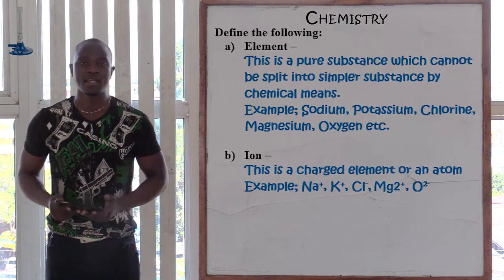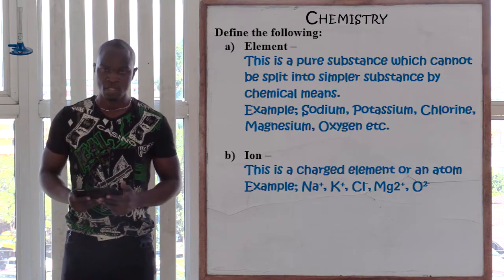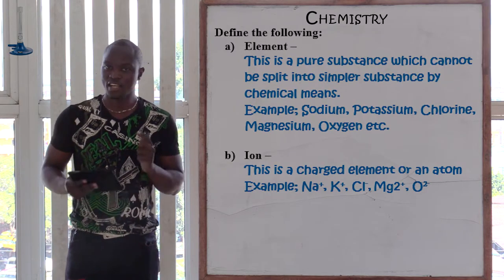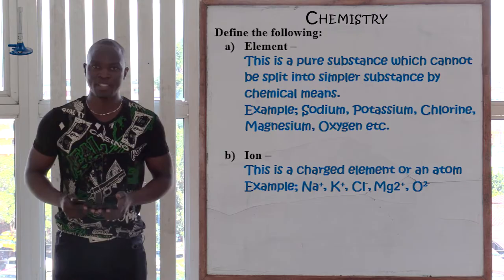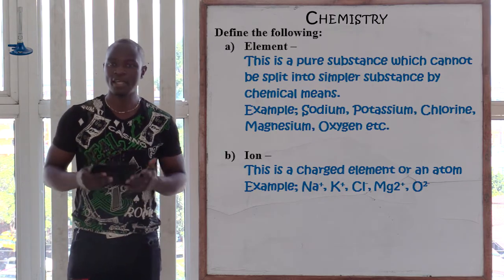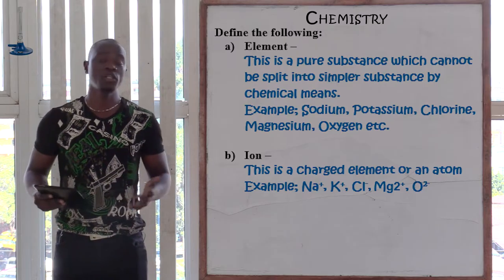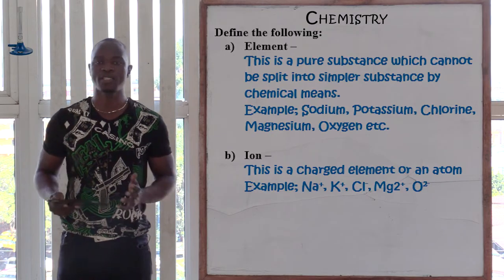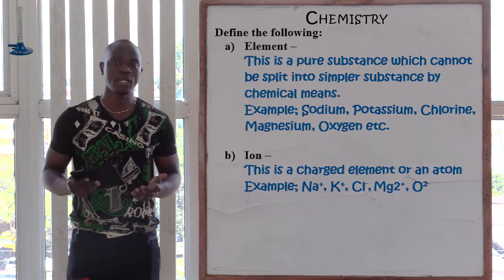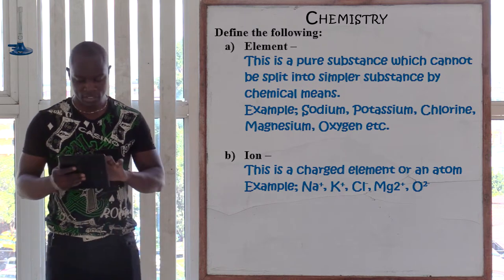So what is an element if you have been asked that question in an exam? An element is a pure substance that cannot be split into any simpler substance by chemical means. So in short, an element is a pure substance that cannot be split into any simpler substances.